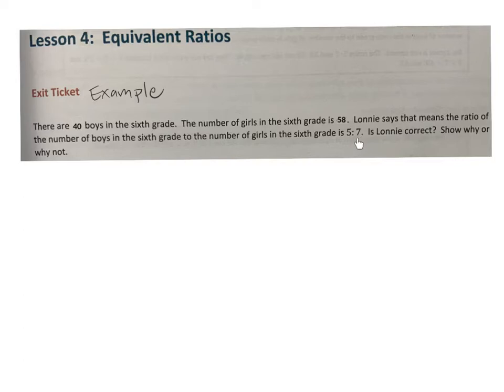So let's read the exit ticket together. There are 40 boys in the sixth grade. The number of girls in the sixth grade is 58. Lonnie says that means the ratio of the number of boys in the sixth grade to the number of girls in the sixth grade is 5 to 7. So we have to find out, is Lonnie correct? And then we have to show why or why not.